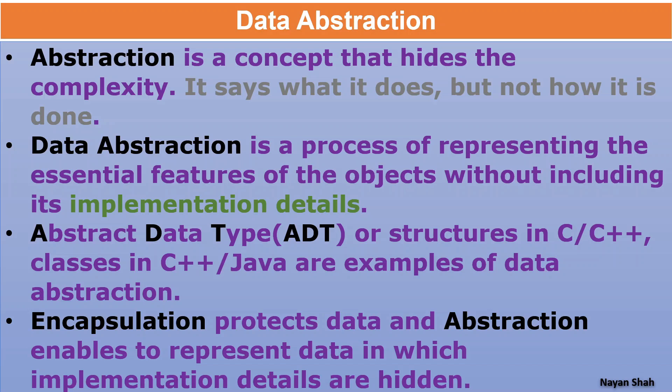A simple example of data abstraction is every function of Microsoft Excel. There are so many functions - some function is doing the total of numbers. How that function is working, we don't know. The complexity of the programming - how it does the calculation - is kept hidden from the user. We know that the SUM function is used to do the addition, but we don't know how it is doing it.